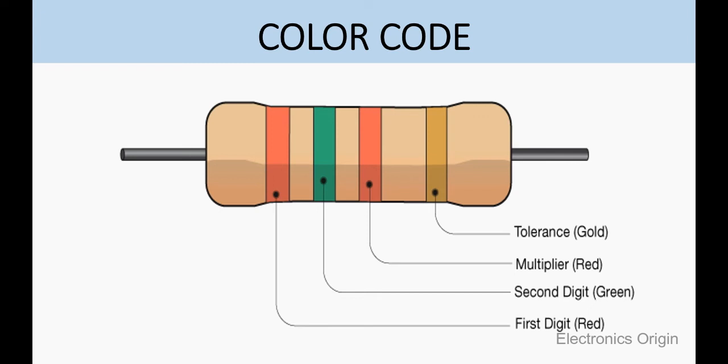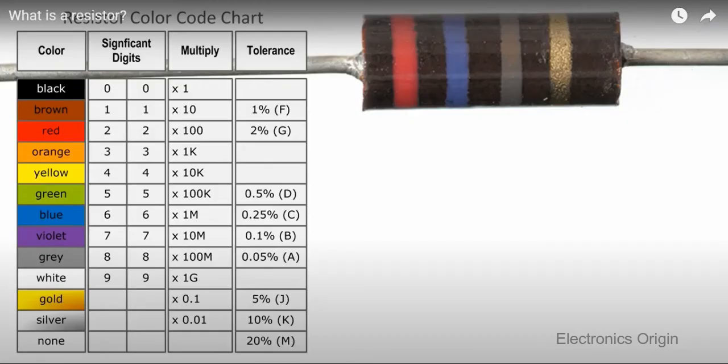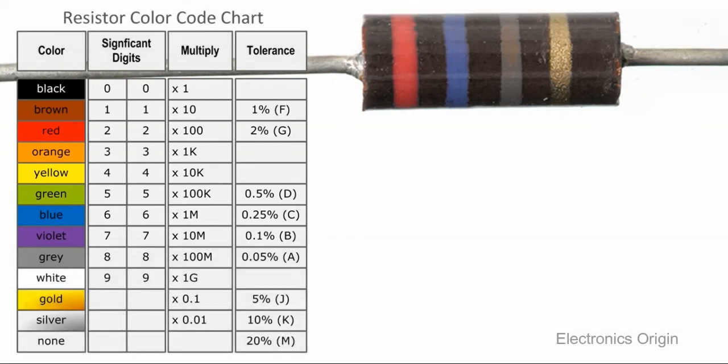The first band gives the first digit of the resistance value. The second band gives the second digit. The third band indicates a multiplication factor, and the fourth band gives the tolerance of the resistor. You can try to memorize the meaning of each band and color. You can even find value using automatic calculator online.